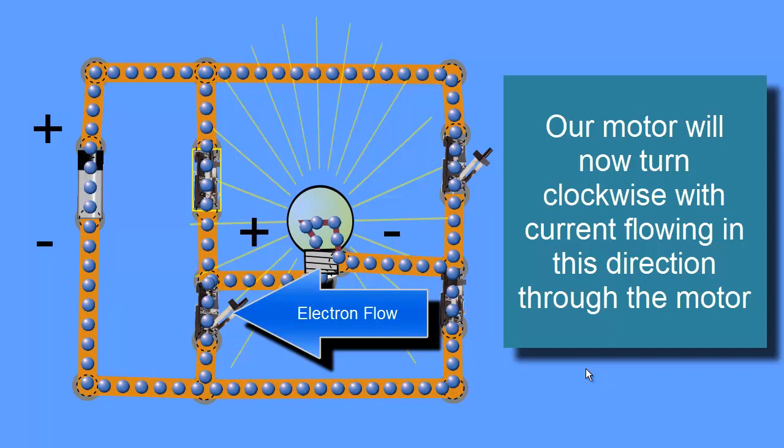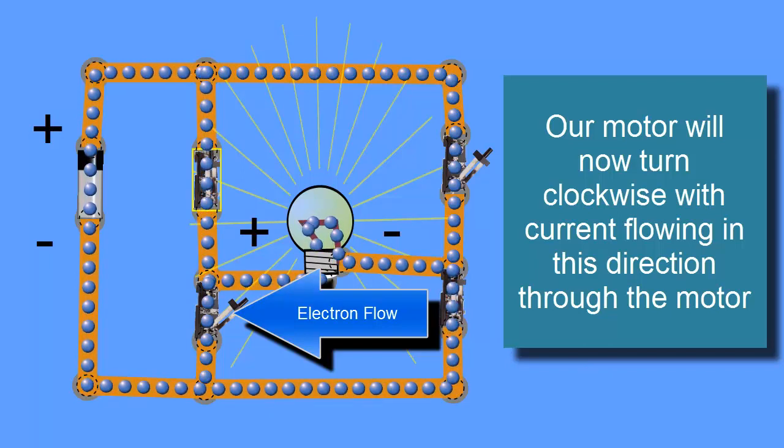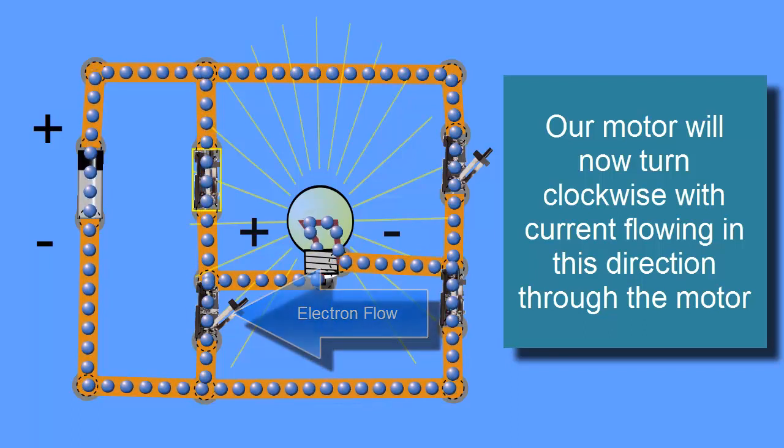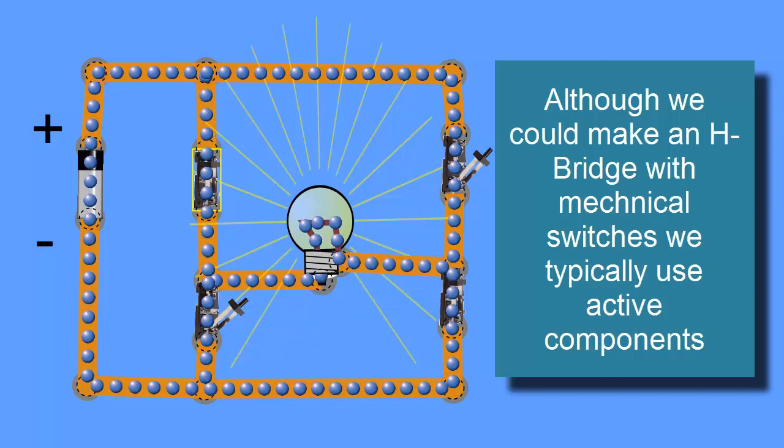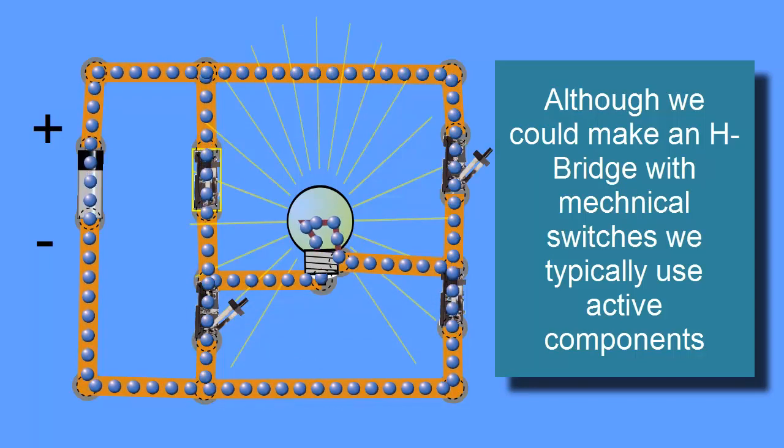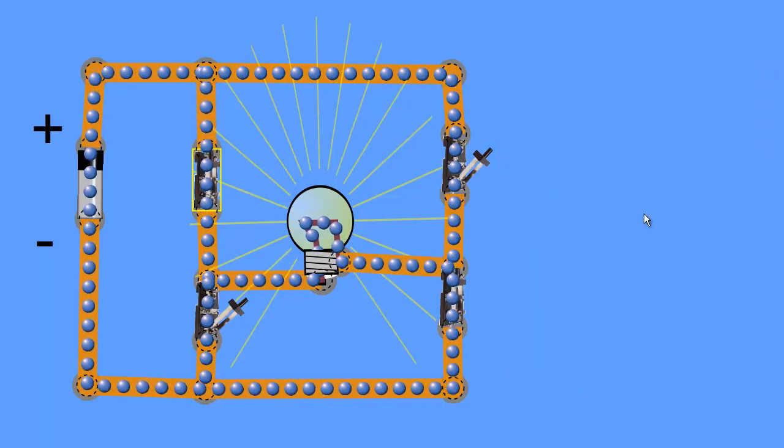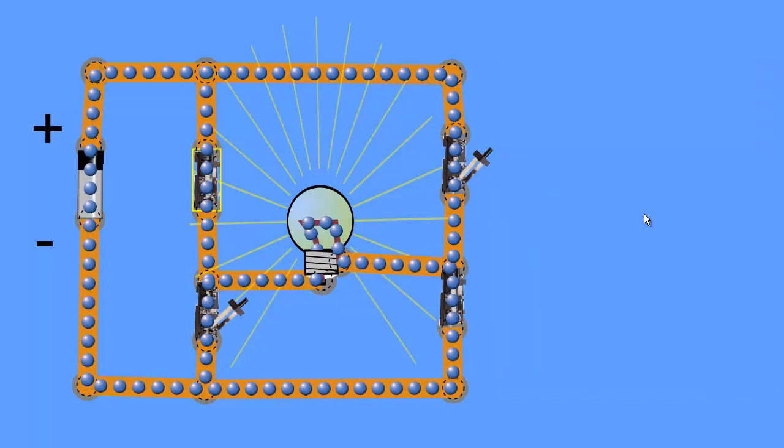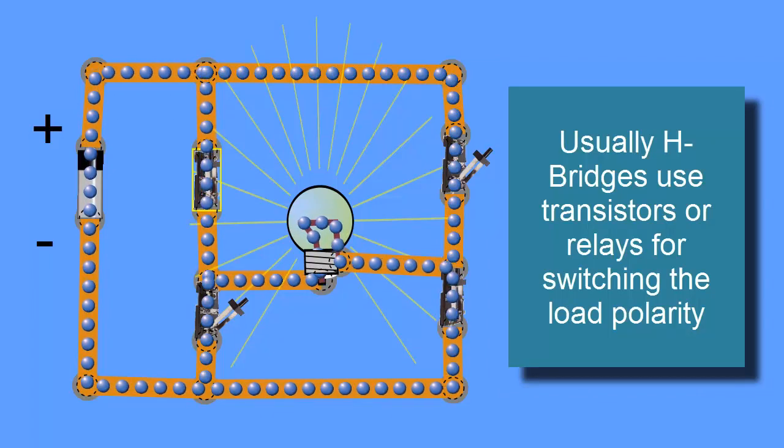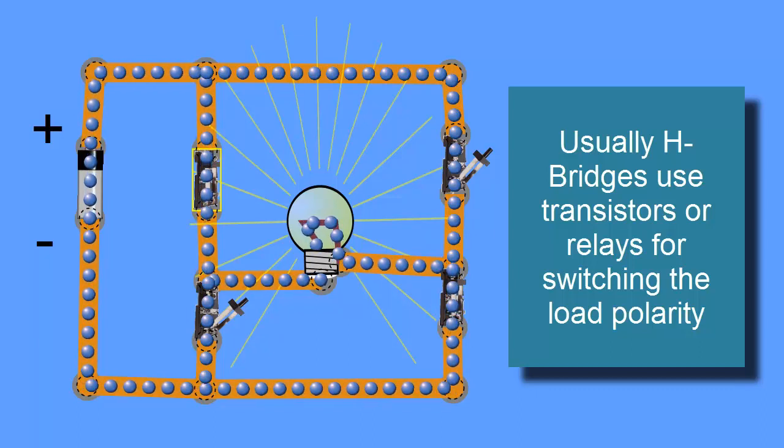Now there's some things that can go wrong with H-bridges, and we've got to be careful. And keep in mind that in a normal H-bridge, we wouldn't use switches like this to make it, although we could. If we had two double-pole switch, we could actually have the switches set up so that when we close one, it goes one direction. And when we open that switch and close the other switch, it goes the other direction. But usually we're going to use things like relays or transistors, field effect transistors, or bipolar junction transistors to switch this thing.